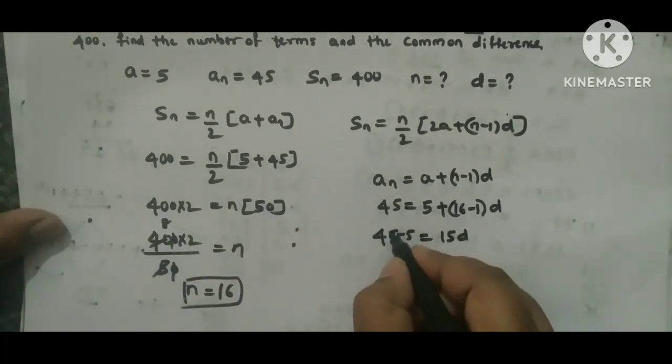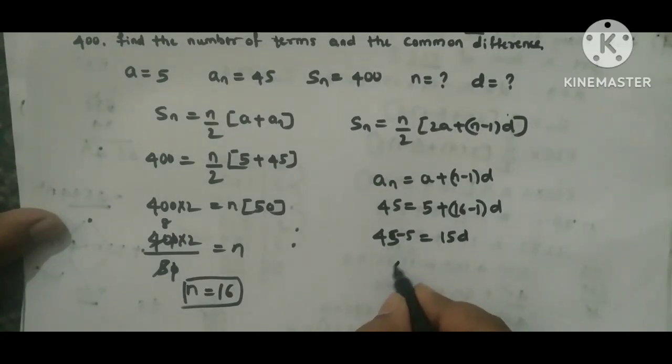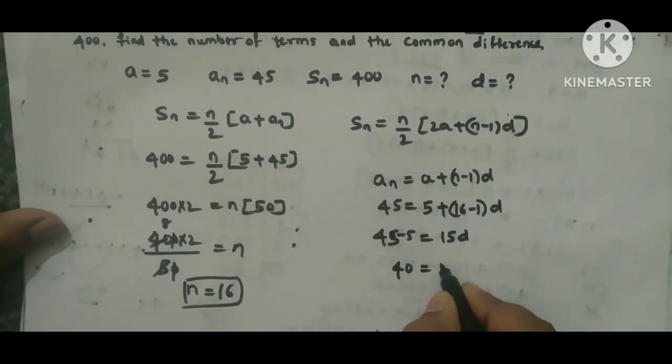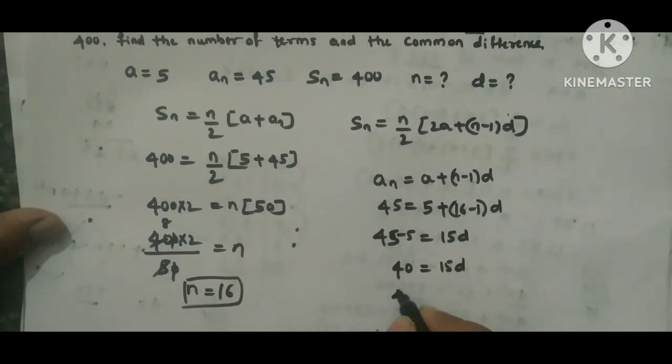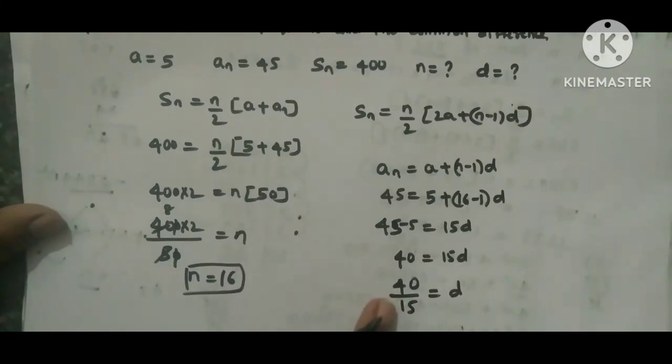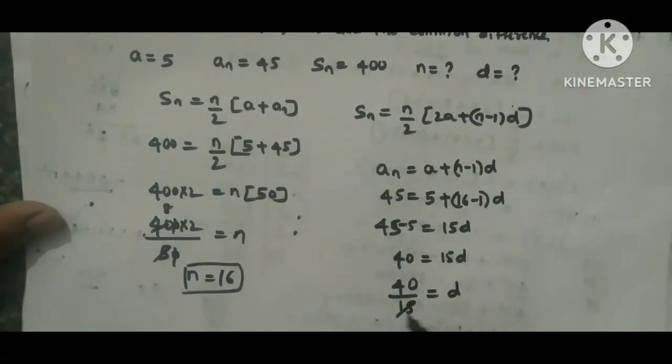This 15 you take left side, so 40/15 = d. Now I'll cancel these two numbers by 5: 5 threes are 15, 5 eights are 40. So d value is 8/3.